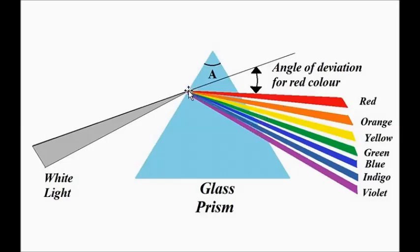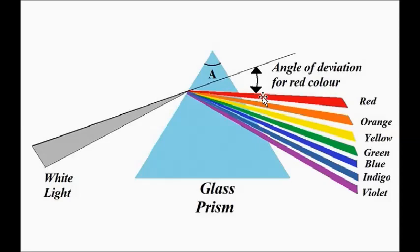The least deviation occurs for red color and the maximum deviation occurs for violet color. Red is at the top and violet is at the bottom. The maximum angle of deviation occurs for violet, the minimum angle of deviation occurs for red, and all the other colors — indigo, blue, green, yellow, orange — are in between.